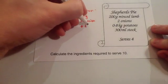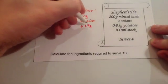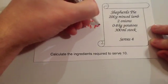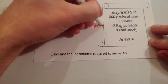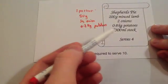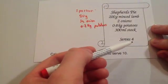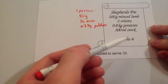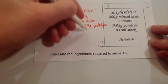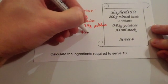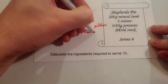And 300 divided by four: half it is 150, half it again is 75. So 75 millilitres of stock.